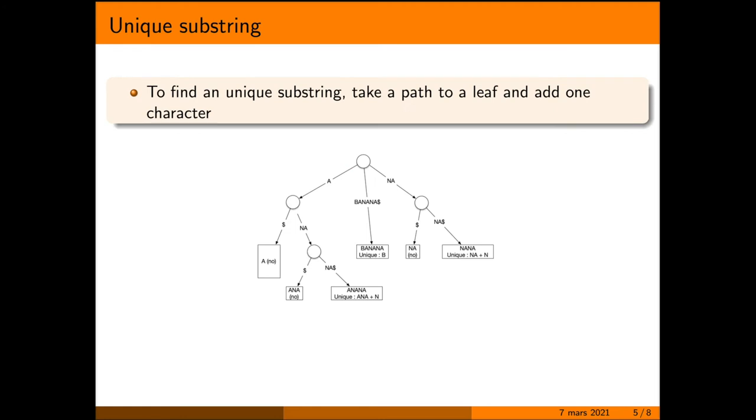Once you have a suffix tree, a substring of S is a path starting at the root and stopping somewhere in the tree. Now if you want a unique substring, you start at the root, you go as far as possible and you stop at the last internal node. You are going to have at least two leaves. This means that the substring so far is not unique. If you want to make it unique, you add one character from the last edge. For example, here you could make the unique substring A and add one N here to make NN, which is unique in banana.